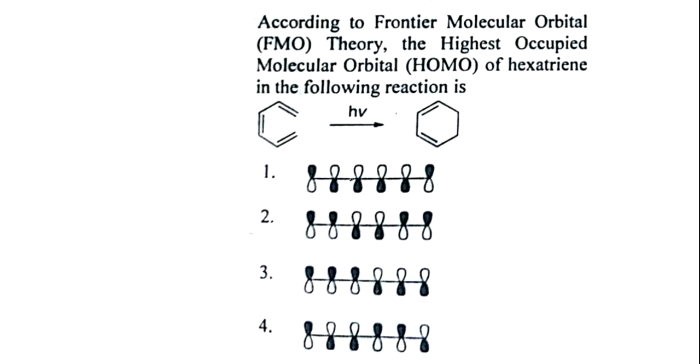Let's see the question. According to Frontier Molecular Orbital theory FMO theory, the highest occupied molecular orbital HOMO of hexatriene in the following reaction is. A reaction is given: hexatriene in hν, that is photoreaction, giving a electrocyclic ring closure reaction.